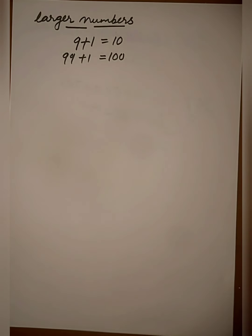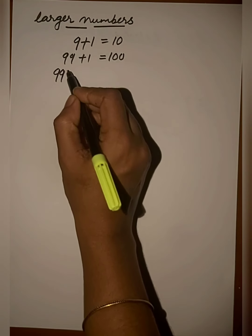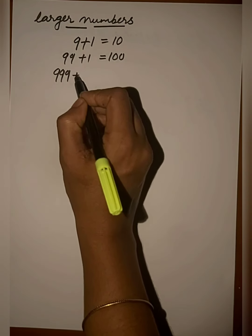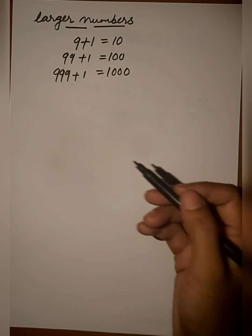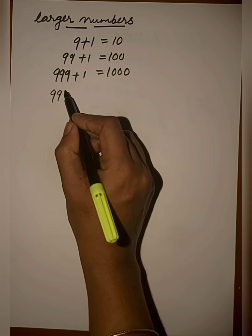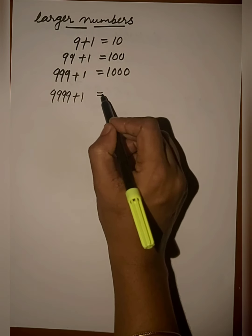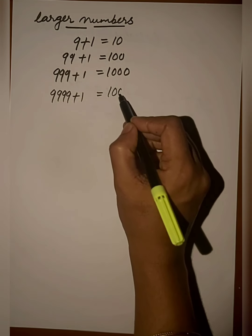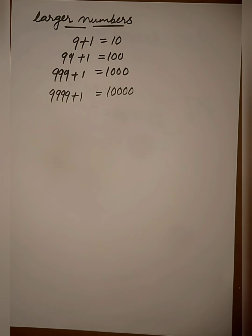Next, 999 plus 1 gives us 1000, which is the smallest four-digit number. Then 9999 plus 1 gives us 10,000, which is the smallest five-digit number.